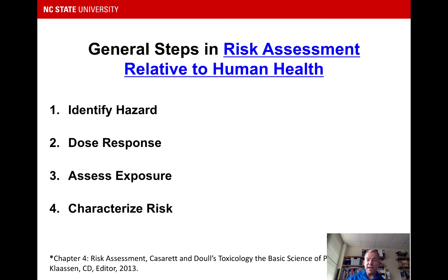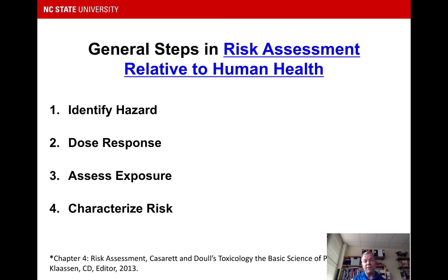There are four steps to risk assessment for human health, which certainly apply to exposures related to food. First, you have to identify a hazard — something that may be harmful. Then you look at a dose response, done typically through in vitro studies, computer modeling, and animal testing. Then you assess the exposure: how much and how often is the human population exposed to this particular potential hazard? And then you characterize the risk in terms of just how dangerous this particular hazard might be.